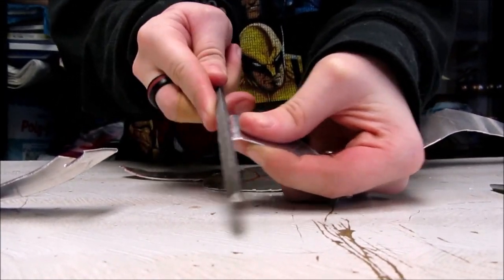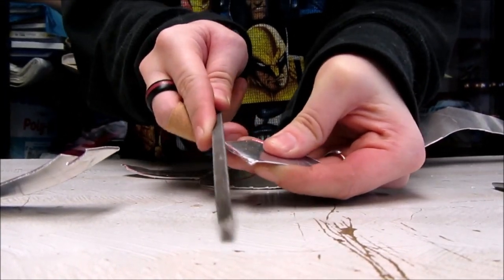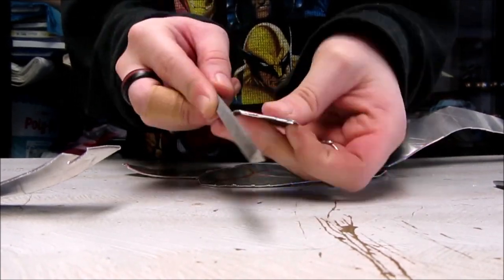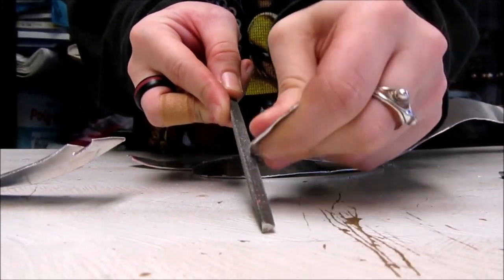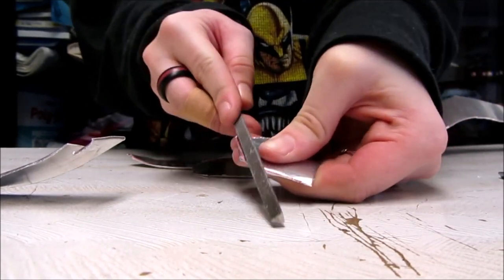If you have a Dremel tool, I recommend using that, but I don't, so I'm using a rat tail file, which is basically a textured metal stick that can sand the edges the way sandpaper does.